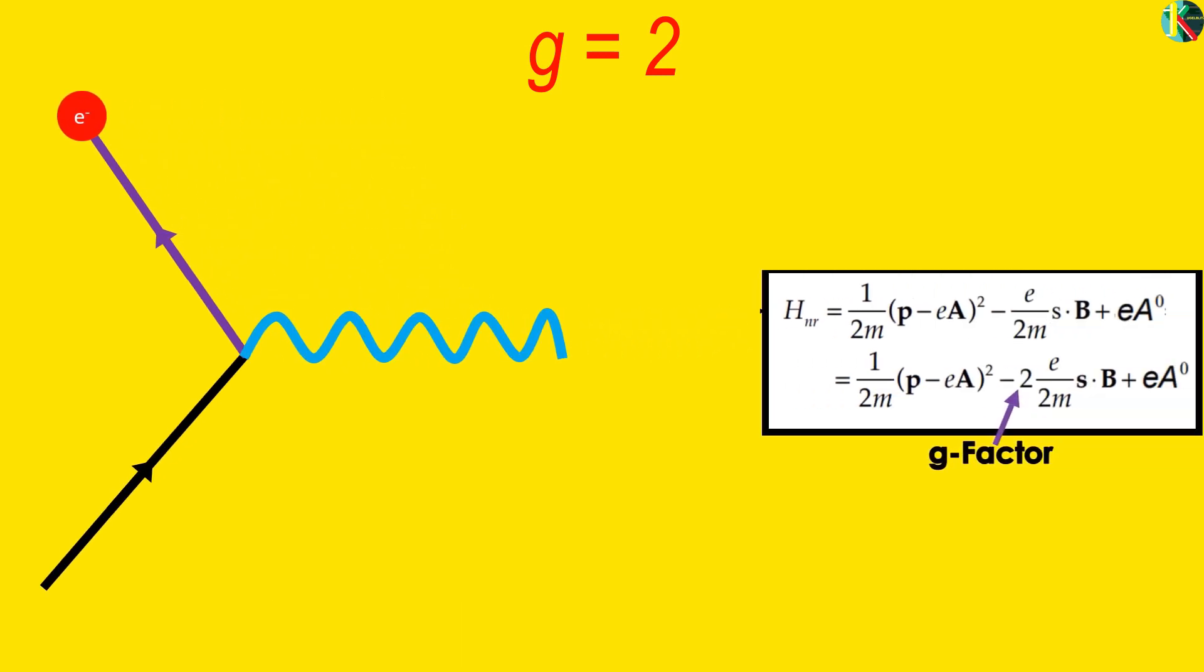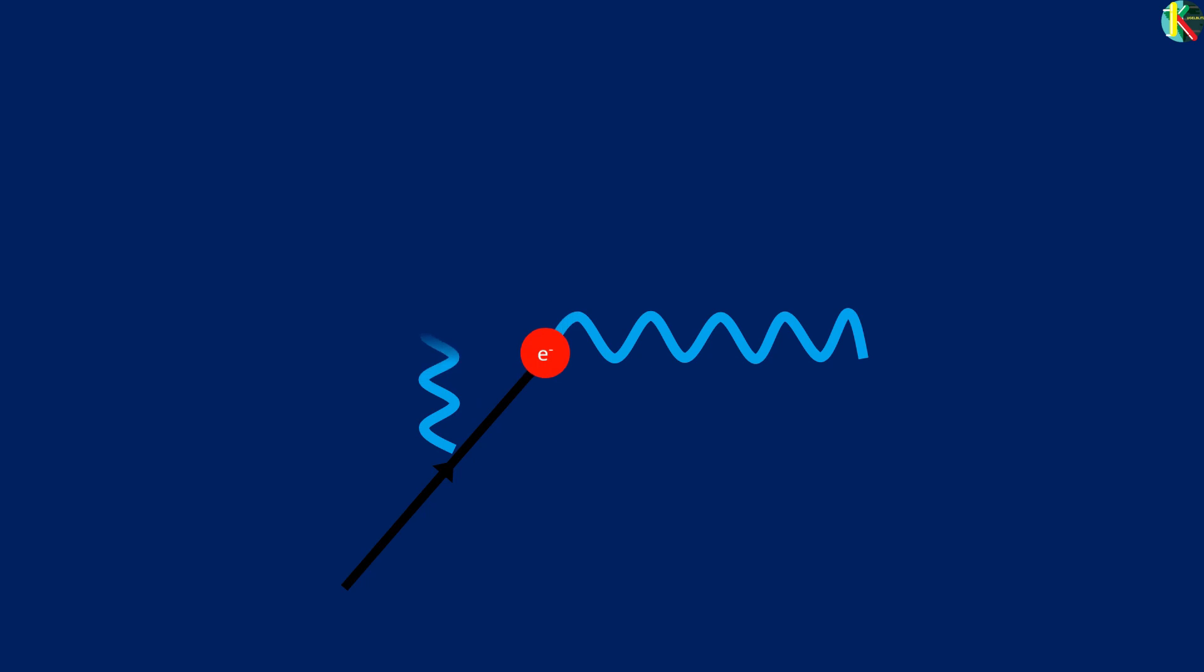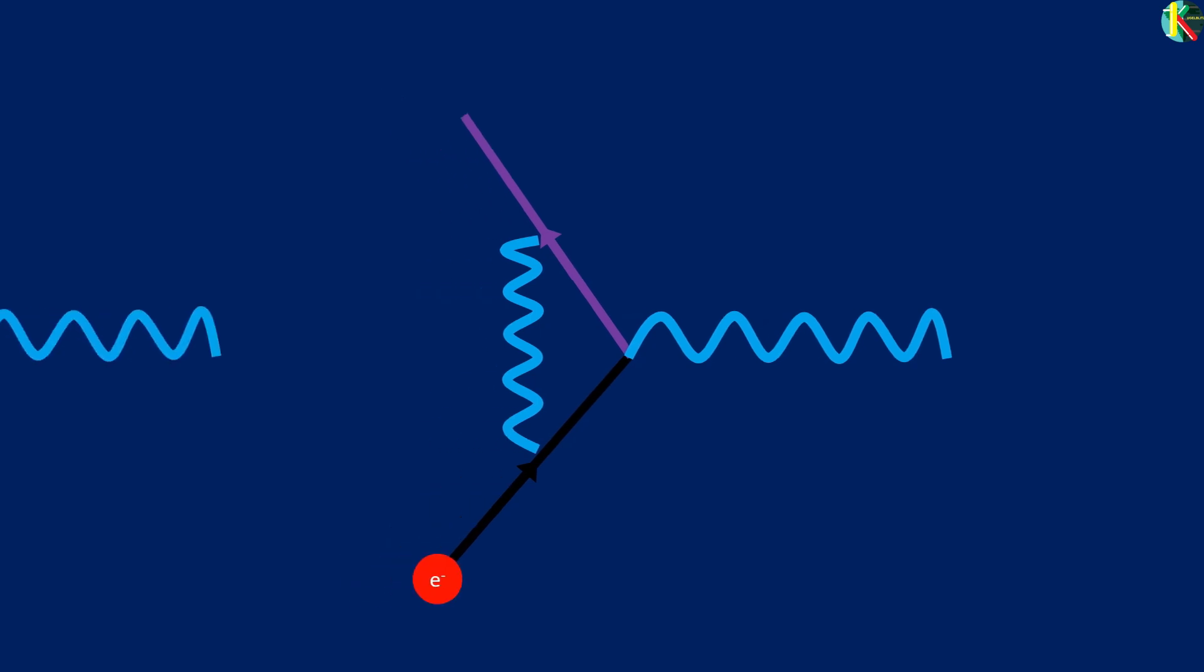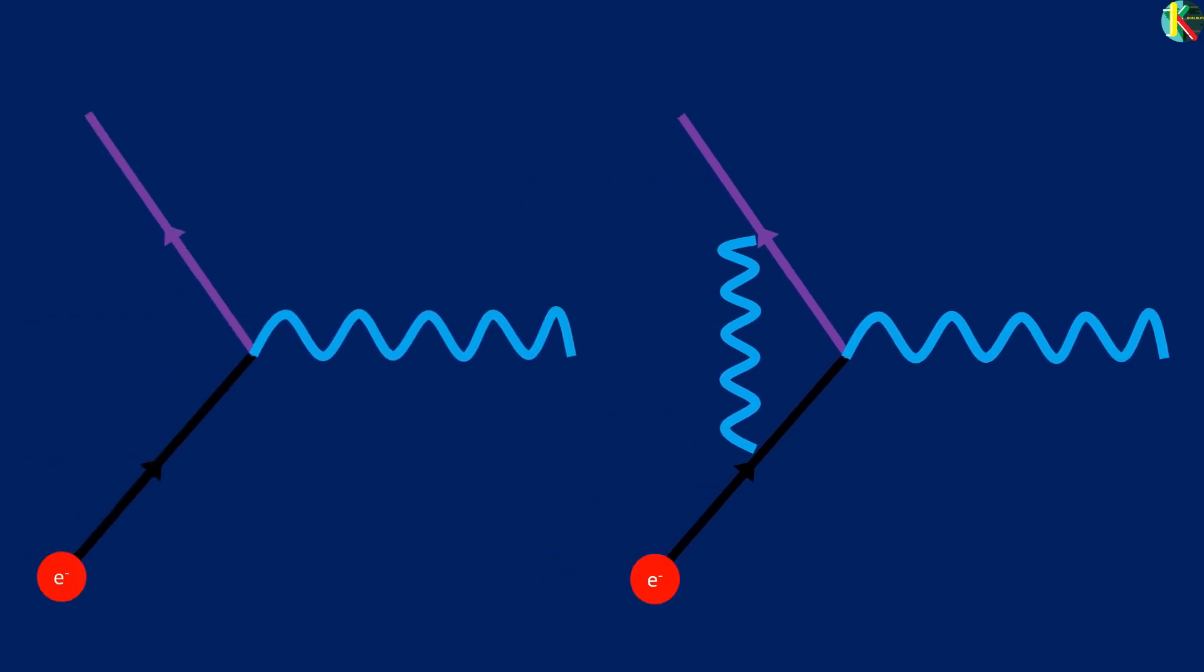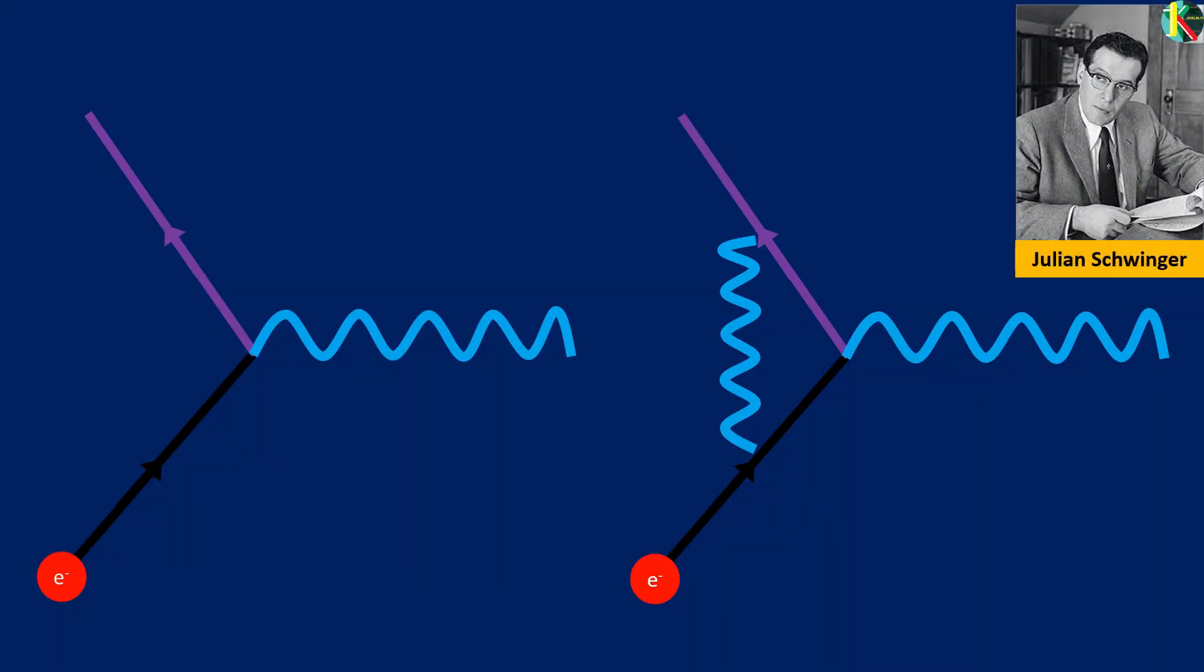But there are other ways this interaction could occur. The next simplest way is for the electron to emit a virtual photon just prior to absorbing the magnetic field photon and then reabsorbing the virtual photon. Same particles in and same particles out but a slightly more complicated sequence of events.